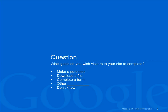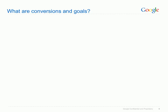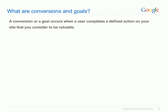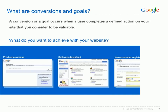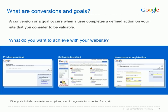With our account structure in place, our next key step is to set up a goal, and if relevant, e-commerce tracking, so that we will be able to see our return on investment from our online marketing. For different websites, a goal or conversion can mean different things. A conversion or goal occurs when a visitor completes a defined action on your site that you consider to be valuable. This can be making a purchase, downloading a file, or requesting additional information. Each website should have one or more goals, and Google Analytics also allows you to track each type of goal.